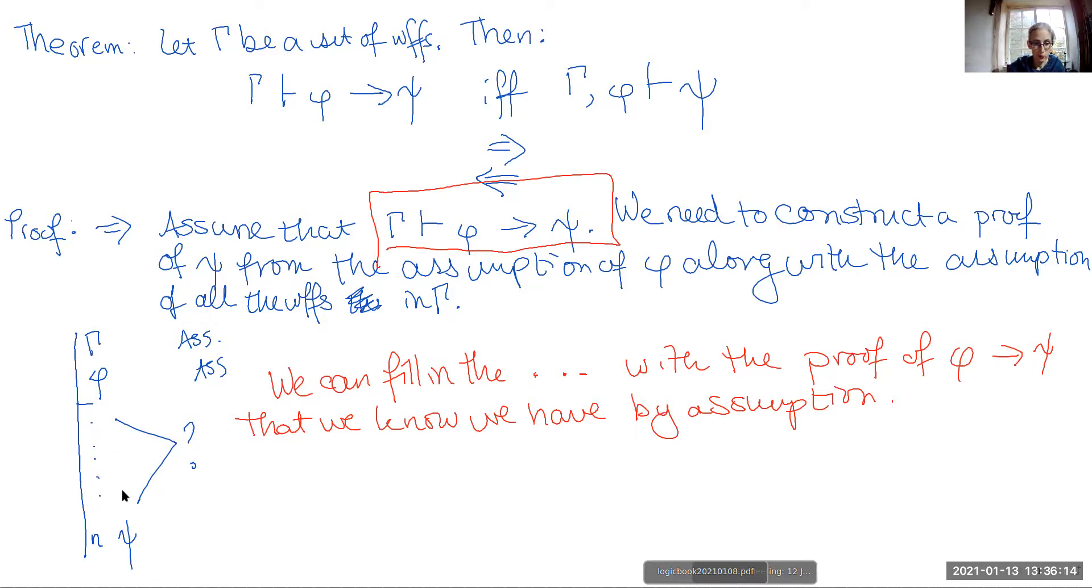So at some line, say line j, we will be able to prove that phi implies psi. This is from assumption one. Then we can just say that we know we have this proof. We insert it into this proof that has this extra assumption of phi, renumbering lines as necessary.